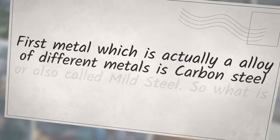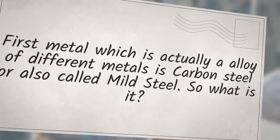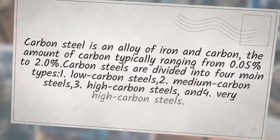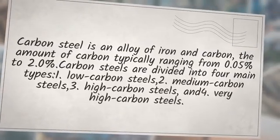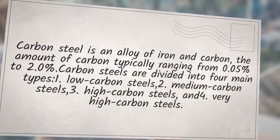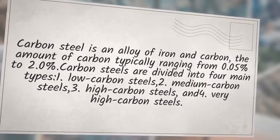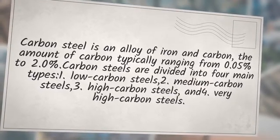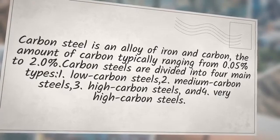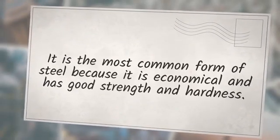The first metal — which is actually an alloy — is carbon steel, also called mild steel. Carbon steel is an alloy of iron and carbon, with the amount of carbon typically ranging from 0.05% to 2.0%. Carbon steels are divided into four main types: low carbon steels, medium carbon steels, high carbon steels, and very high carbon steels. It is the most common form of steel because it is economical and has good strength and hardness.